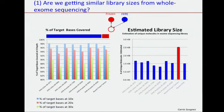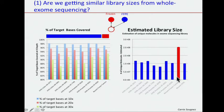Are we getting similar library sizes? What you can see here is the coverage on FFPE versus the frozen. In these cases we actually sequenced the FFPE deeper, so the coverage is a bit higher in the FFPE compared to the frozen. For library size, the frozen has roughly double the library size, but even 100 million molecules in library size is well above what we need in order to sequence deep. So there's no problem in getting a deep enough library to sequence.